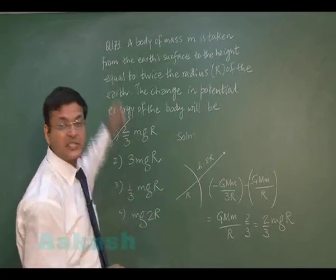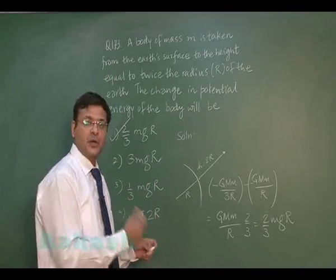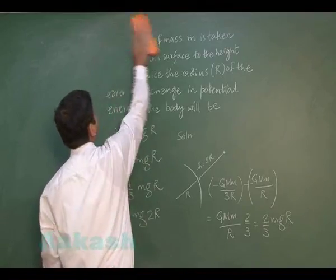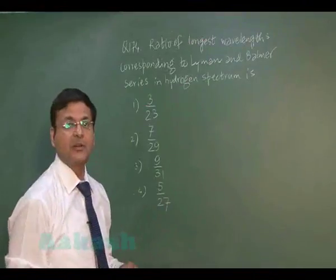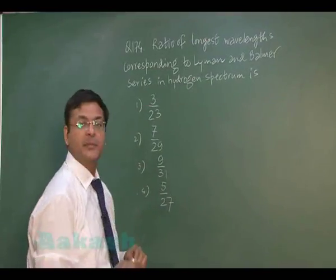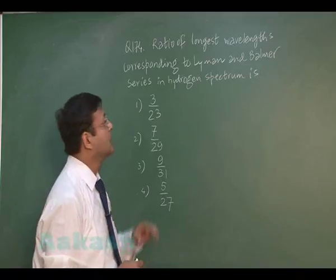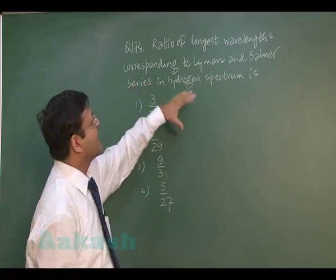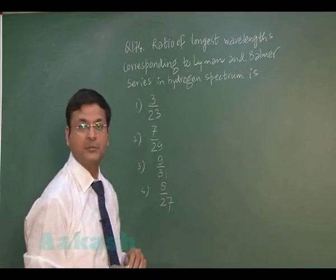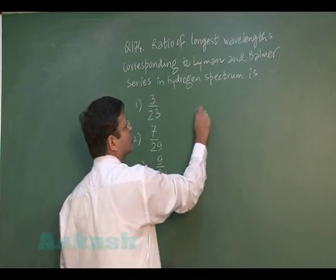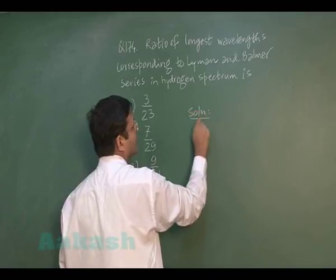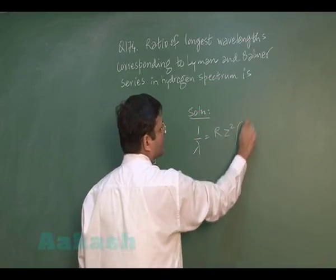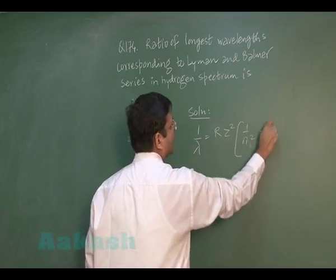Next is question 174, which is based on Bohr's model of the hydrogen atom. They are demanding the ratio of longest wavelengths corresponding to the Lyman and Balmer series in the hydrogen spectrum. For this, you should use Rydberg's formula: 1/λ = RZ² (1/N₁² minus 1/N₂²).